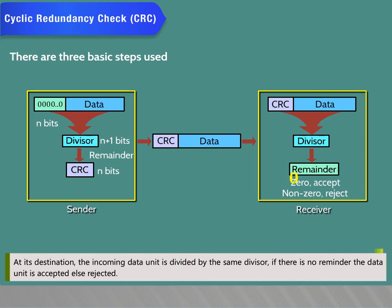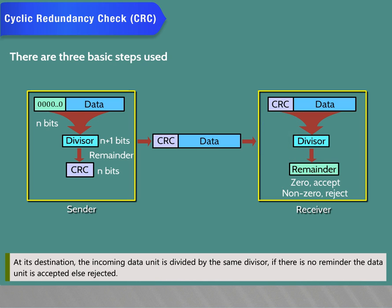At its destination, the incoming data unit is divided by the same divisor. If there is no remainder, the data unit is accepted; otherwise it is rejected.